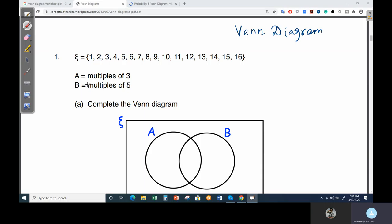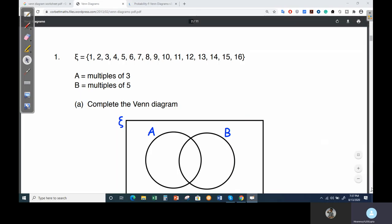Now the thing is you have to check the multiples of three. What are the multiples of three from this list of ξ? You have to check. After getting the values A and B, then only you can make this diagram. So let's begin. Let me take a little space, then the whole diagram will come.